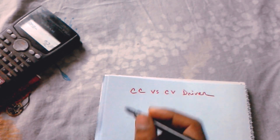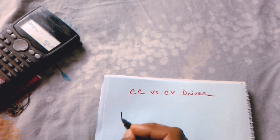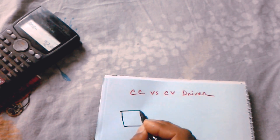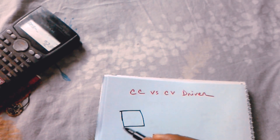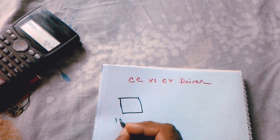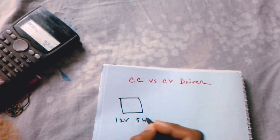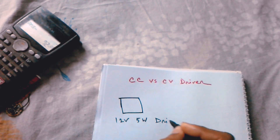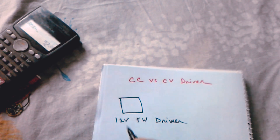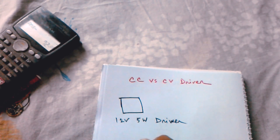We have one driver here. The bar drivers are 5W. You can see that the barboard is an ampere driver, and the action driver is an ampere driver.